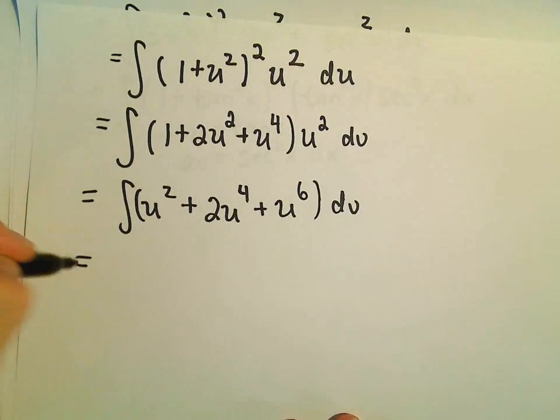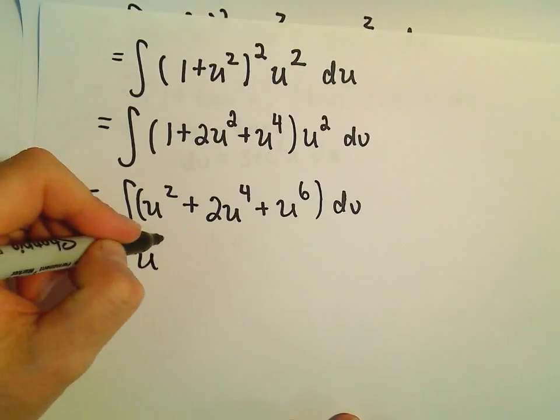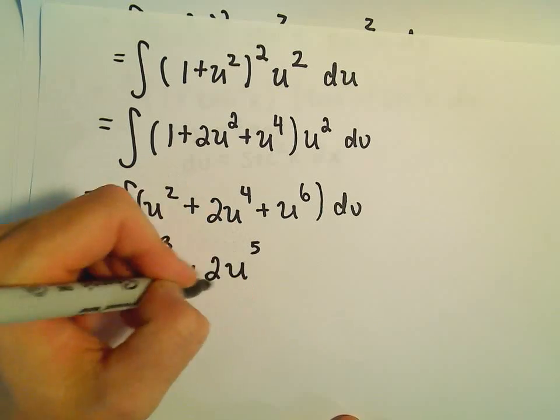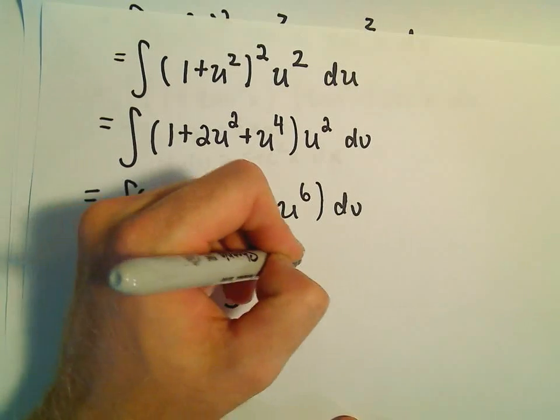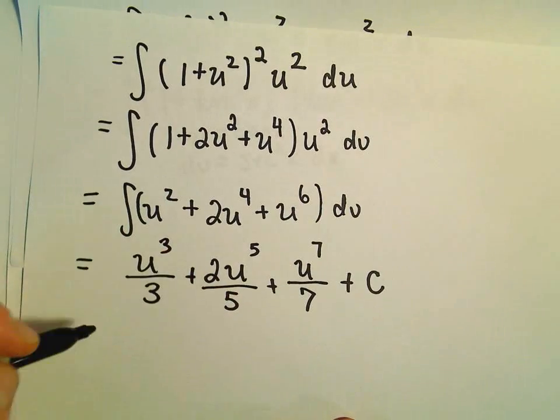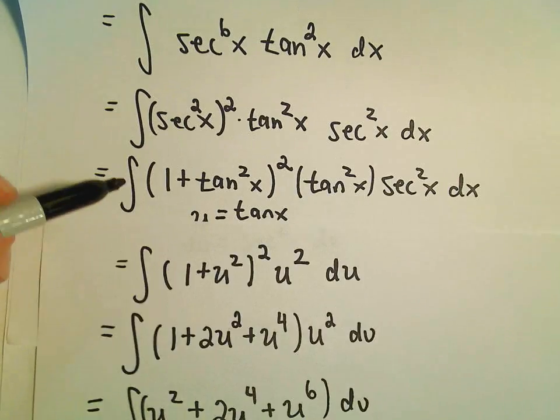Now we've done the hard part. The antiderivative is u to the third over 3, plus 2u to the fifth over 5, plus u to the seventh over 7, plus C. Now I'll plug the u substitution back in.